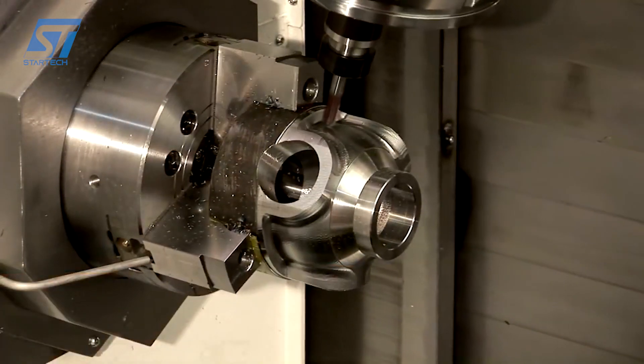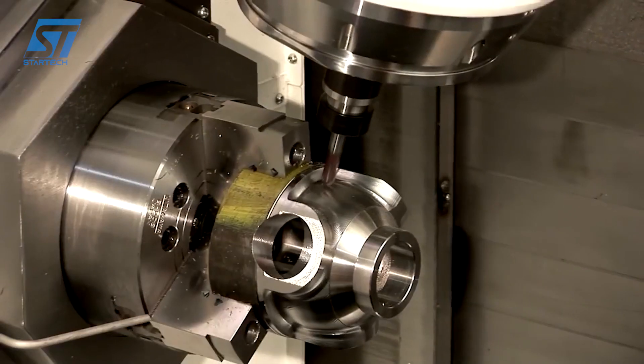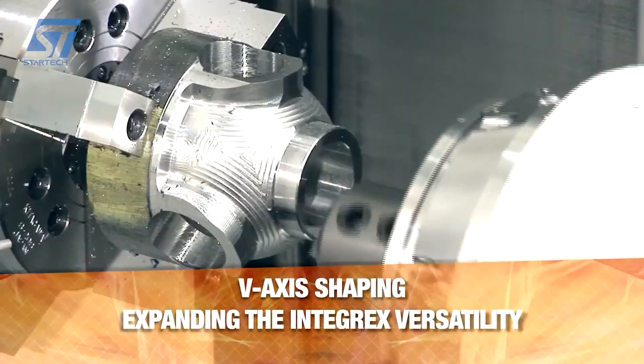The machine features a robust milling spindle with a B-axis swiveling capability. This allows for complex contours and shapes to be machined with high precision.